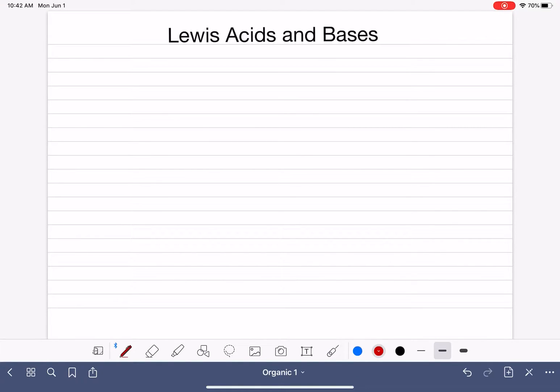There are times where the Bronsted-Lowry definition does not apply to a chemical reaction, and in those situations we use a different method for classifying acids and bases, and that is the Lewis method.